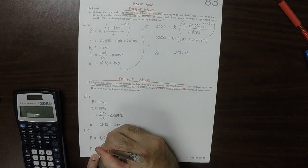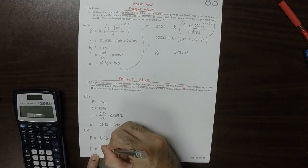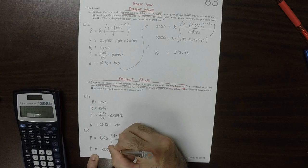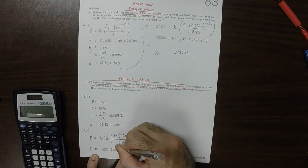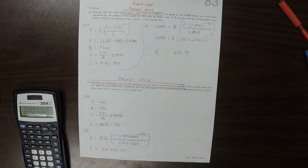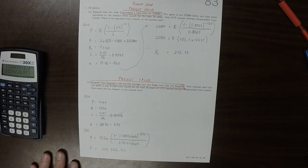So according to this, it's $200,922.70. So that is the amount of money that was financed.